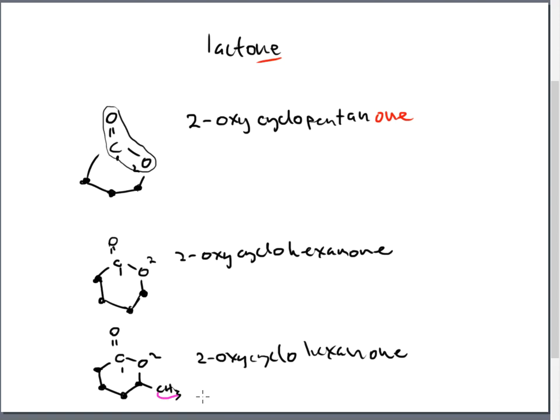How do we include the methyl group? If carbon one is the carbonyl and spot two is the oxygen, then this is spot number three, and on that third spot we have a methyl group. There's no difference — that's the way I include it in IUPAC, the way I've always included it. So the name of the structure is 3-methyl-2-oxycyclohexanone.